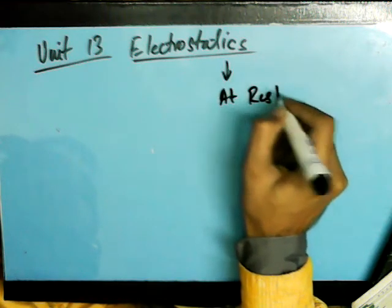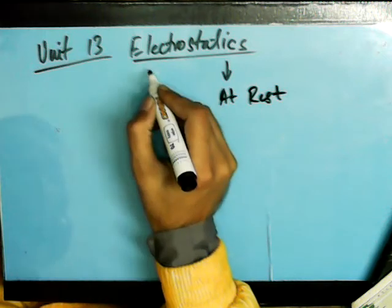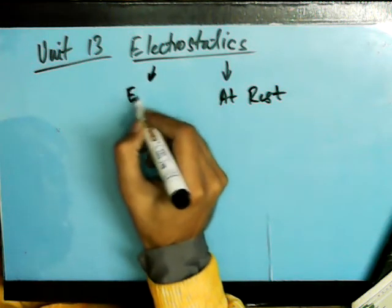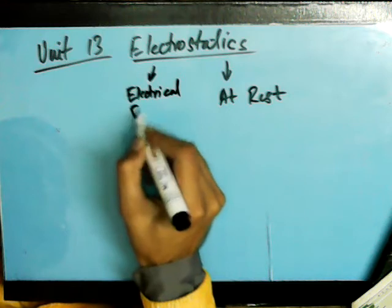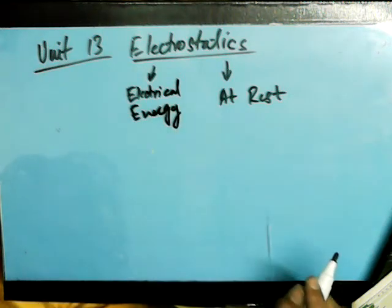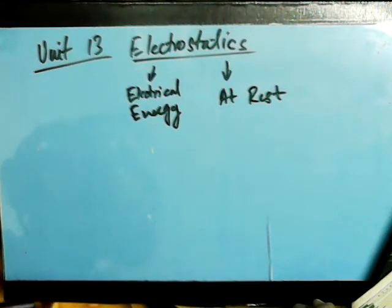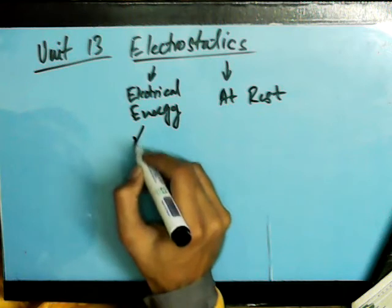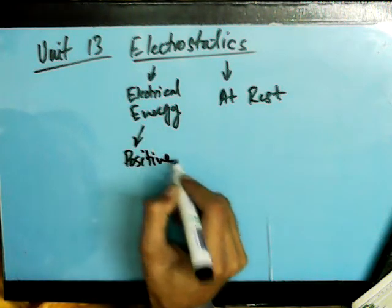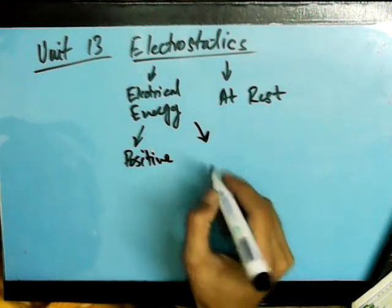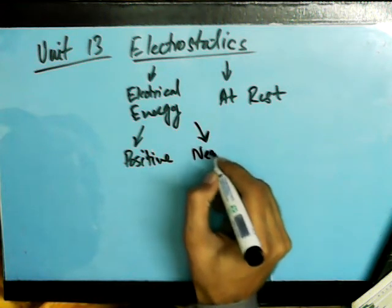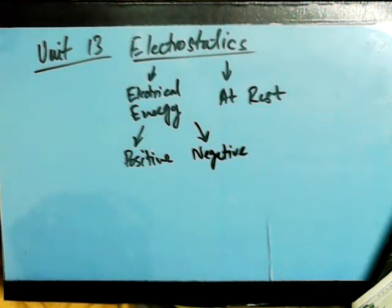Statics means being at rest — that is what we know from kinematics — and electro means a reference to electrical energy. So, energy which is electrical in nature, or corresponds to electrical subatomic particles which are charged. By charge, we mean energy which can be both positive in terms of protons, or negative if we are discussing electrons. So we have two types of electrical energies: negative and positive.